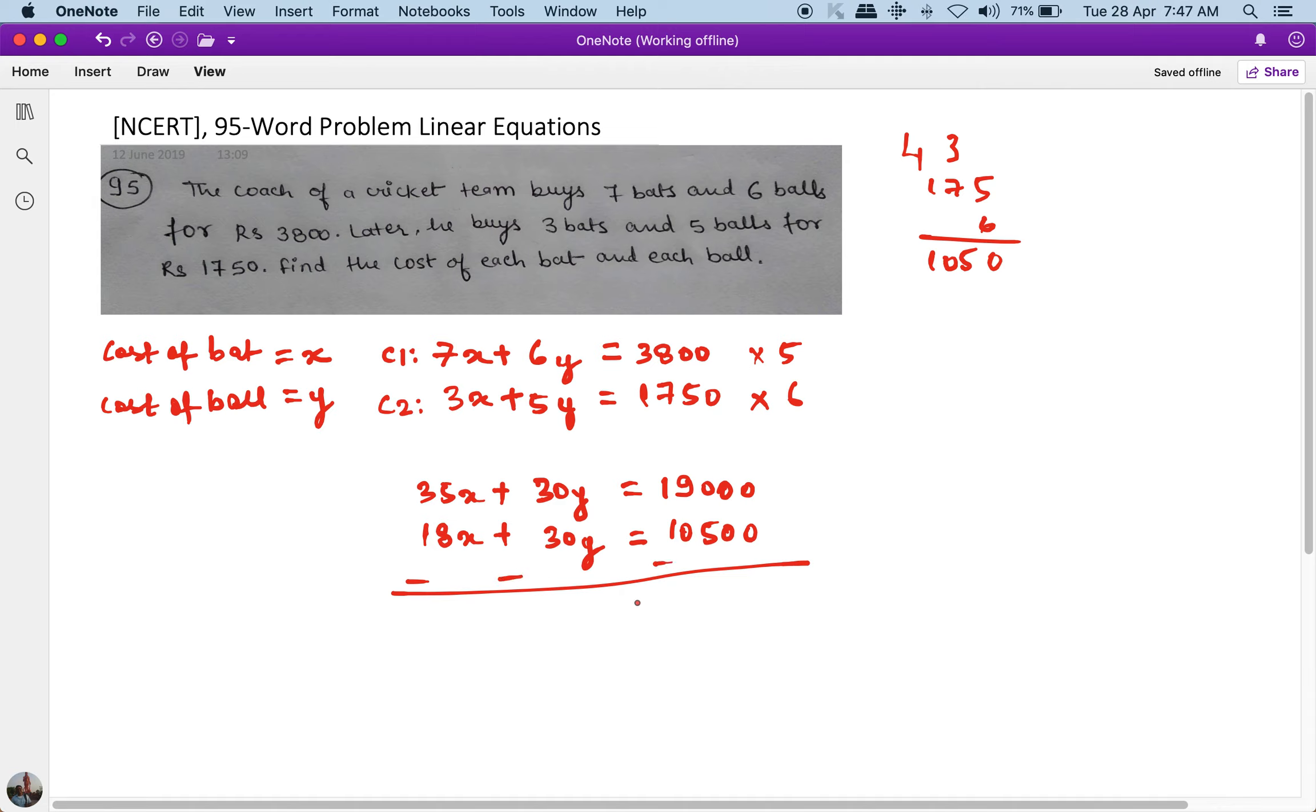19000 minus 10500, which is 8500. So x equals 8500 divided by 17, which equals 500. Now if x equals 500, we can put the value of x in equation two.